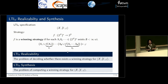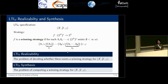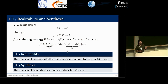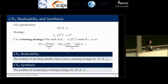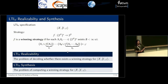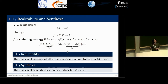A strategy is a function that maps finite sequences of subsets of X variables to a subset of Y variables. If the agent plays according to strategy F, it is able to generate one finite play that satisfies the specification phi. We consider two different problems: LTLf realizability is the problem of determining whether there exists one winning strategy for the agent, and synthesis is the problem of computing one winning strategy.